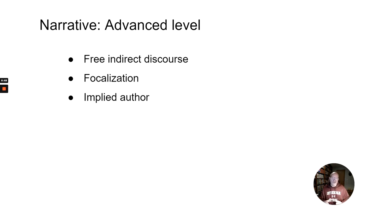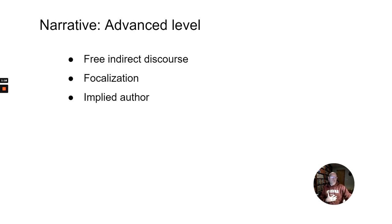At an advanced level, some more subtle concepts we talk about with narrative include free indirect discourse, which I'll talk about in a minute. Focalization is another one — that's where the narrator moves either closer to or farther away from the interior world of a character. There's also the notion of implied author: sometimes when the narrator kind of breaks away from what we think the author thinks, that creates a separate notion of what we think the author is actually thinking, which writers sometimes use very deliberately.